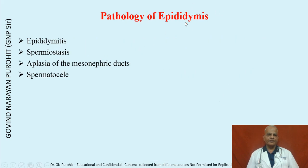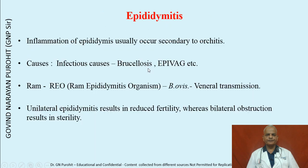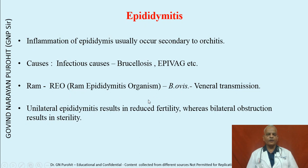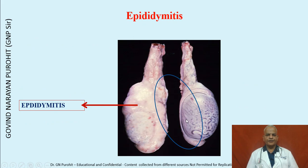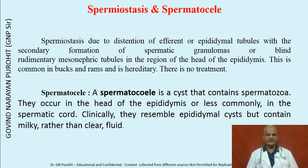Pathologies of the epididymis include epididymitis, spermiostasis, aplasia of the mesonephric ducts, and spermatocele. Epididymitis is inflammation of the epididymis usually occurring secondary to orchitis; causes include brucellosis and other diseases. In the ram, Brucella ovis has venereal transmission. Unilateral epididymitis results in reduced fertility, whereas bilateral obstruction results in sterility. Spermiostasis is due to distention of efferent or epididymal tubules with secondary formation of spermatic granulomas, or blind rudimentary mesonephric tubules in the region of the head of the epididymis; it is common in bucks and rams and is hereditary, with no treatment available.